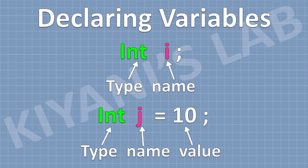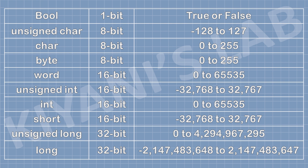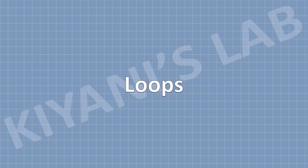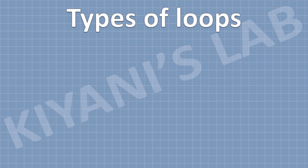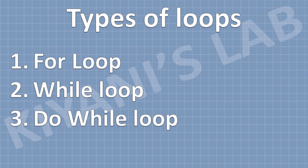These are examples of variables with and without initial values. These are the different variable types — different variable types can store data of different nature and size. Now let's move to the main topic, which is loops. A loop is a program structure that repeats a set of commands until a specific condition is met. There are 3 types of loops used in Arduino: for loop, while loop, and do-while loop.